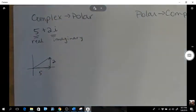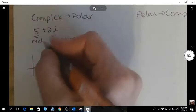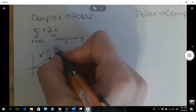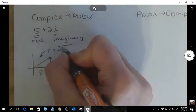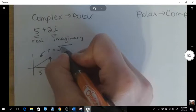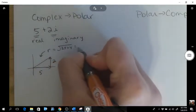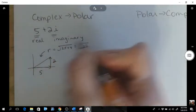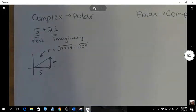So the first thing is that I'm going to get this r value. So r is the square root of 25 plus 4, which is the square root of 29. I could just leave it like that because that does not come out evenly.